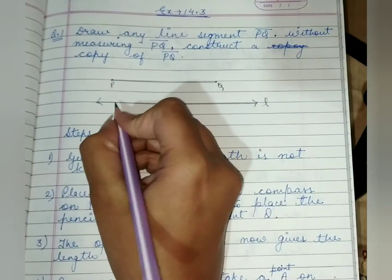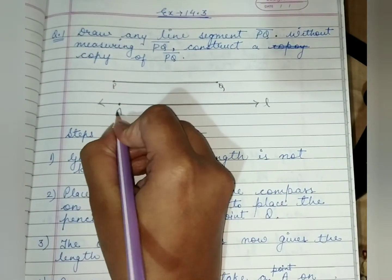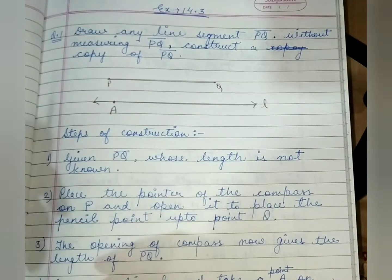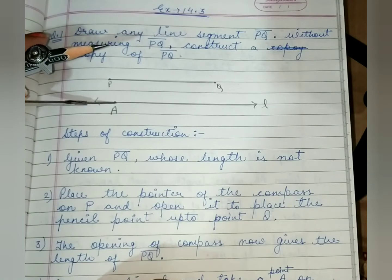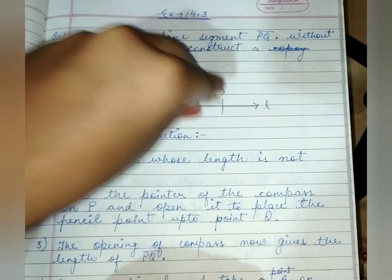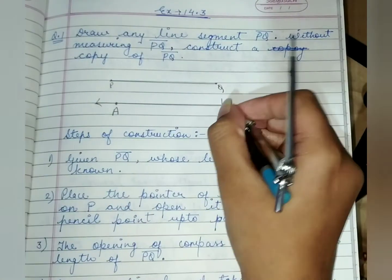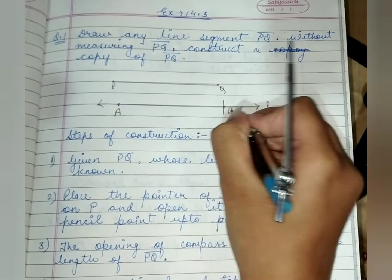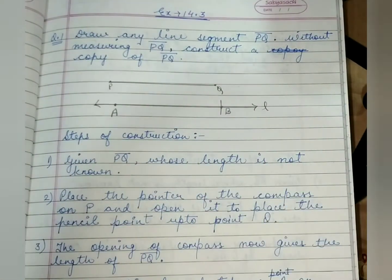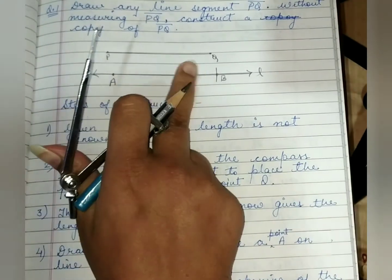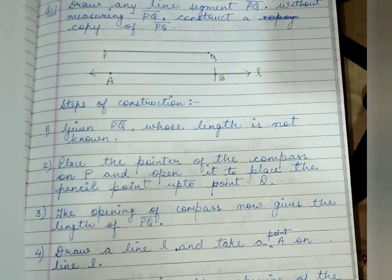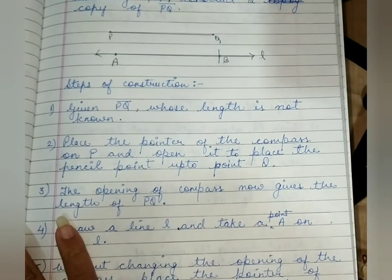Now we have to make a point and name it A. Without changing the compass measurement, we put the pointer on point A and draw an arc. Where this arc intersects the line, we name that point B. So AB is the copy of line segment PQ.